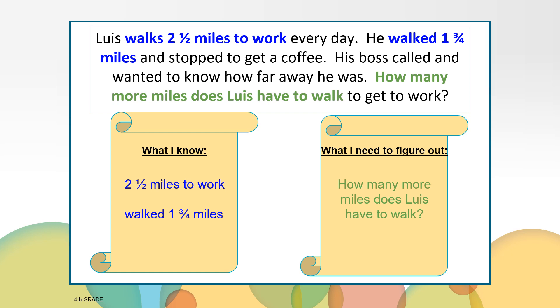Is there extra information in this story that we won't need to solve the problem? Yes, we don't need to know that Lewis stopped to get a coffee, or that his boss called and wanted to know how far away he was. However, this information does help us to imagine what's happening in the story.